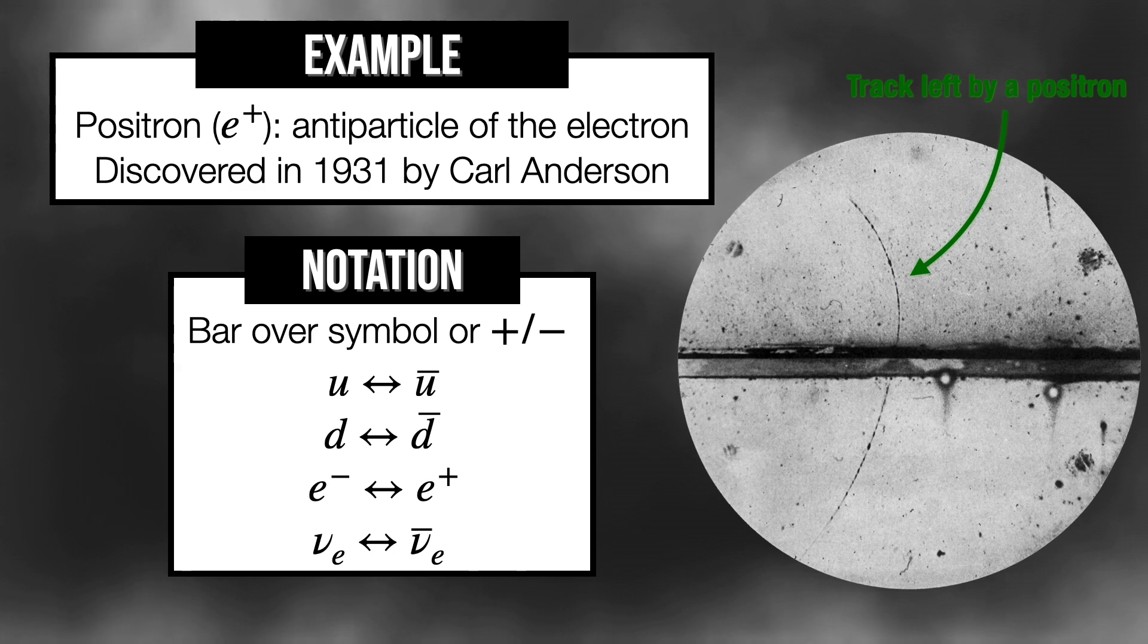And here we have an example of how its particle track is very different from the electron. Notation-wise, we often use a bar over a symbol or a plus-minus sign to indicate an antiparticle.